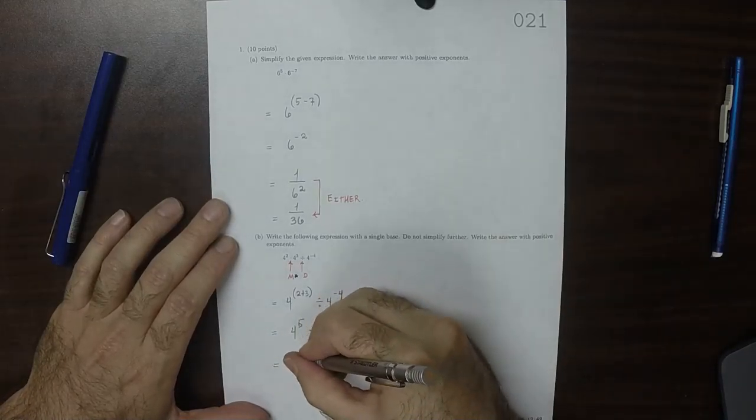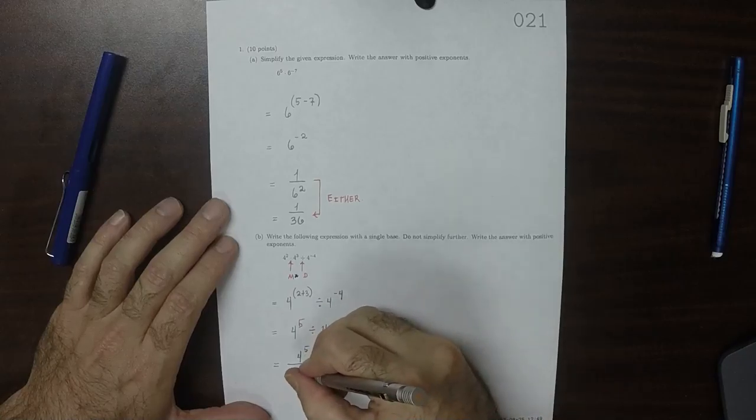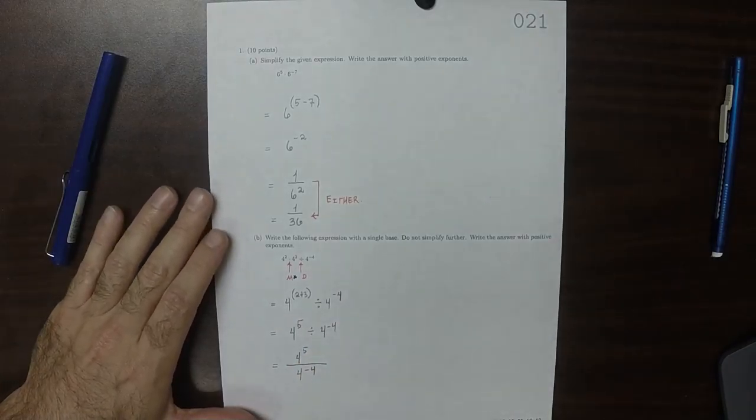But now I'm going to write this in a way that's a little more comfortable to look at. So 4 to exponent 5 divided by 4 to negative 4.